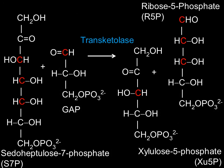The first two carbons from sedoheptulose-7-phosphate will be transferred to our final remaining glyceraldehyde-3-phosphate by transketolase to generate xylulose-5-phosphate and ribose-5-phosphate.